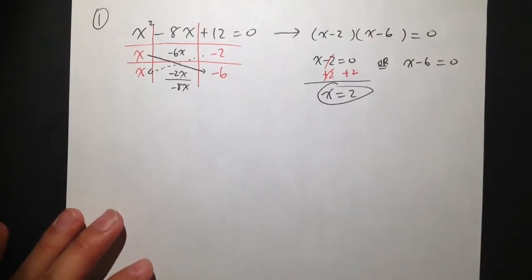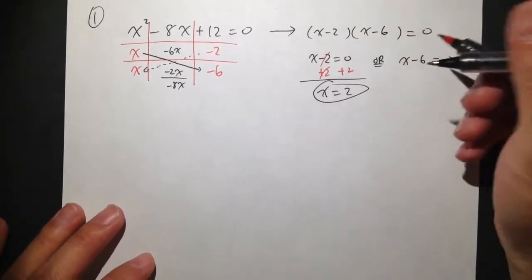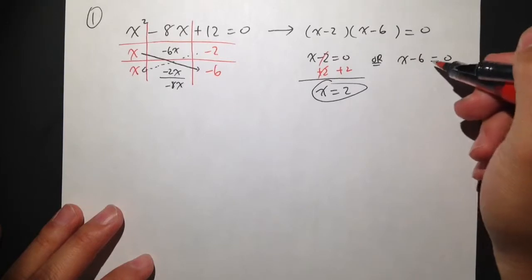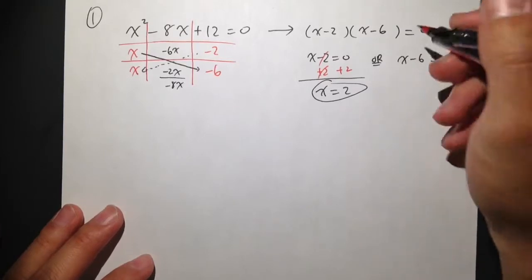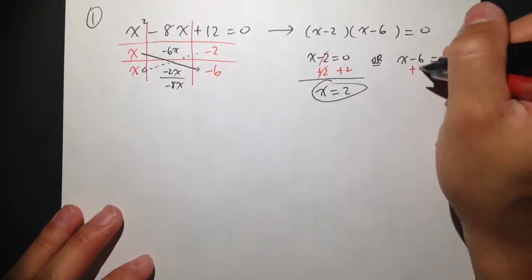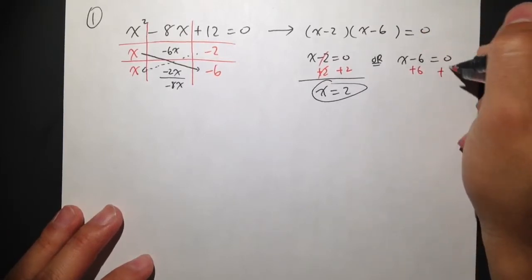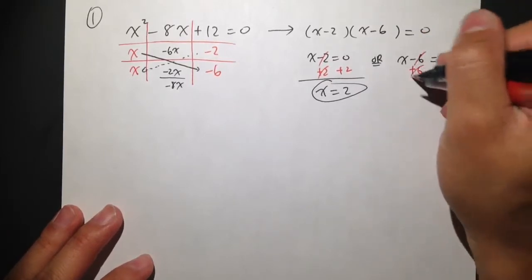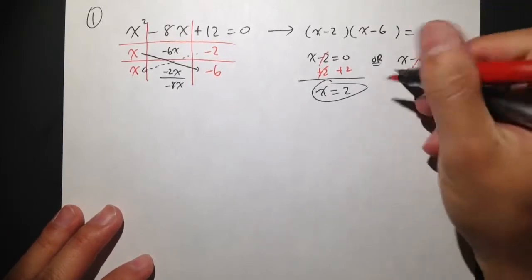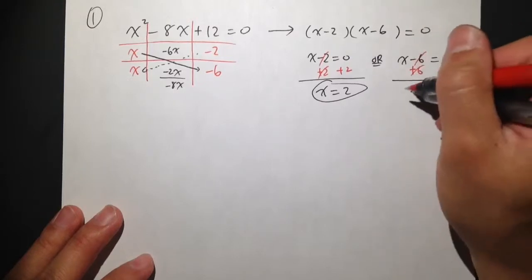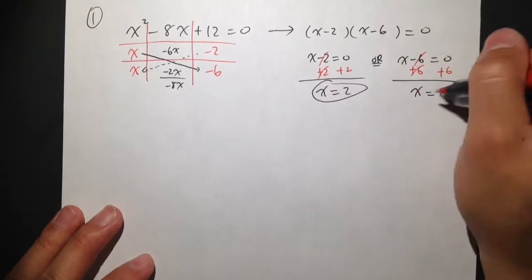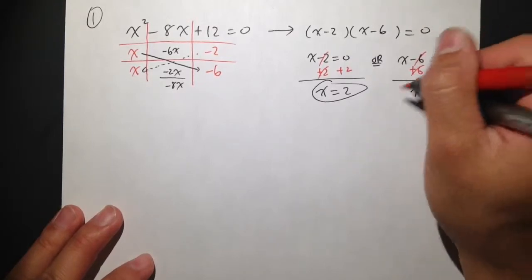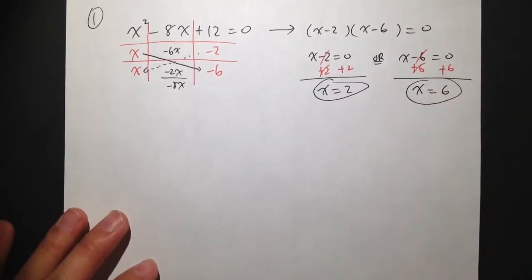And then for the second equation, x minus 6 is equal to zero. We just need to add 6 on both sides, and we get x is equal to 6. That is the second answer.